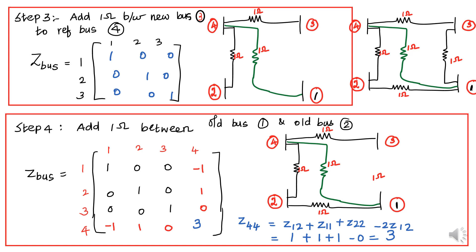Next, step number 3: Add 1 ohm between new bus 3 and reference bus 4. Here the order of the matrix is increased by 1, giving a 3x3 matrix with labels 1, 2, 3. Already we have Z(1,1) and Z(2,2). Now fill Z(3,3) = 1. Is there any connection between buses 3 and 1, 3 and 2? No. There is no connection between buses 1 and 2, 3 and 1, or 3 and 2. So all remaining off-diagonal elements are simply 0. This is the new matrix obtained from step number 3.